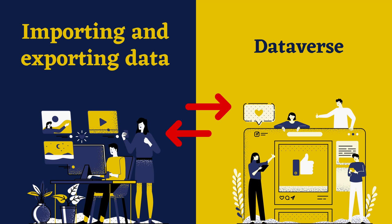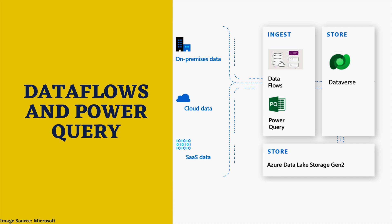There are multiple ways to import and export data in Microsoft Dataverse. You can use data flows, Power Query, Azure Data Factory, Azure Logic Apps, and Power Automate. Dynamics customers also have access to data export services. Let's discuss them one by one. Data flows in Microsoft Power Platform enable you to connect with business data from various sources, clean and transform it, and then load it into Dataverse. Data flows support dozens of popular on-premises, cloud, and software-as-a-service data sources.